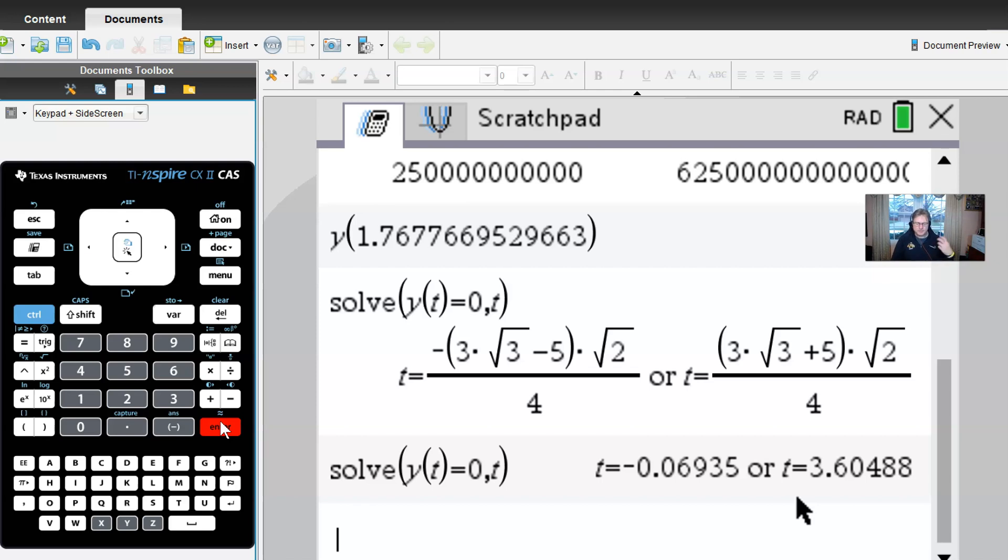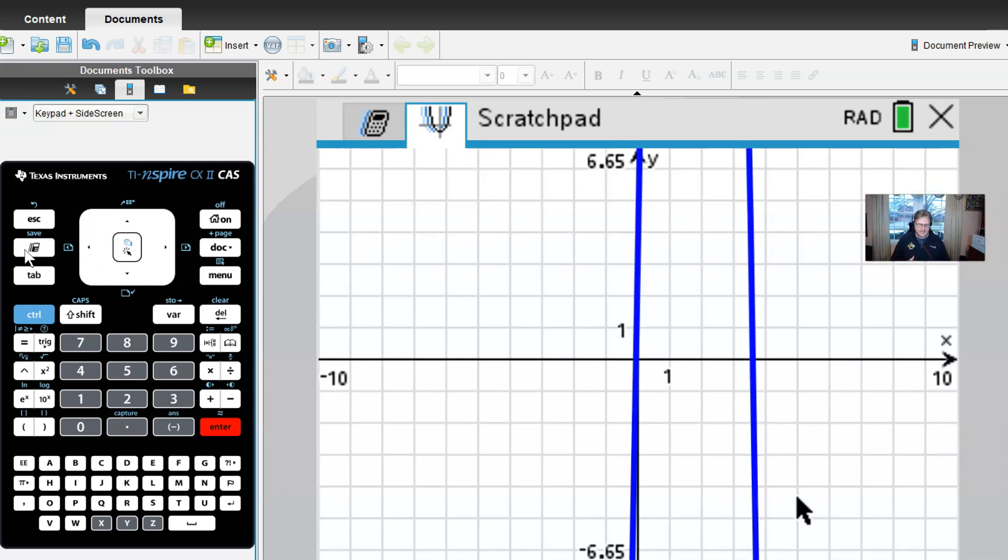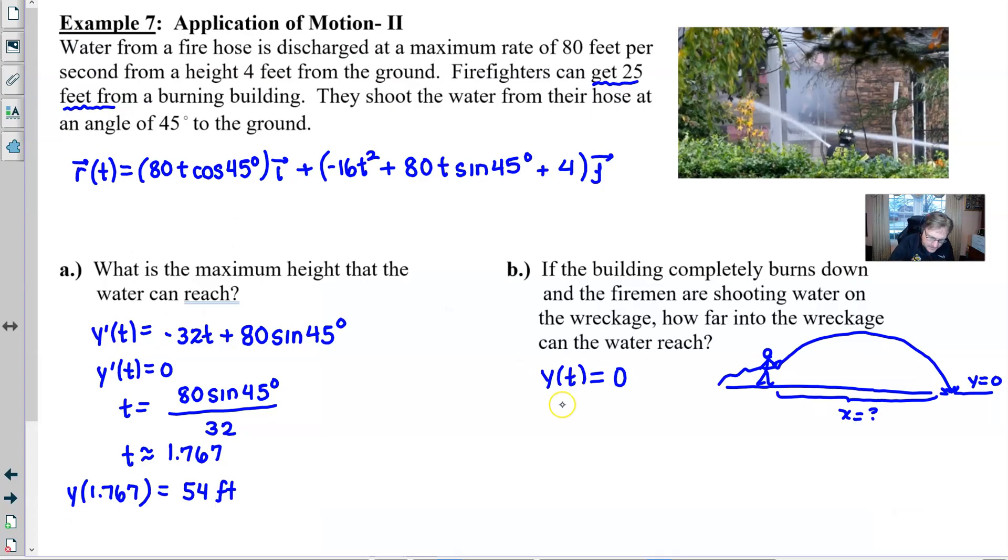Now, for those of you who might be using a different kind of calculator, you might be thinking about graphing this, you would graph Y of X in this case. And we could see here that this is not a really perfect depiction because of my scale could probably be altered. But right here is going to be that intersection point, which you can tell is three and some change, which is going to corroborate the 3.604 that you found here. So that is our time at which our water is going to reach that end.